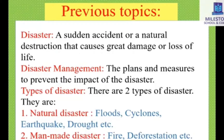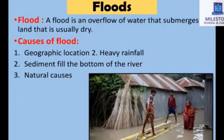Man-made disasters include fire, deforestation, etc. This type of man-made disaster occurs due to unconsciousness of people. Fire happens due to unconsciousness of human beings. Deforestation occurs whenever we are building large high-rise buildings and factories, at which time we need to cut down trees. These disasters are all very harmful for us.